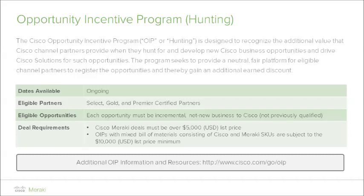Cisco OIP is also known and referred to as hunting in certain countries. The focus of the program is to reward and recognize the Cisco channel partner community when they seek out and develop new potential Cisco and Meraki business. OIP and hunting is a platform on which we build a neutral and fair playing field for those qualified partners that proactively register the opportunities they have developed or discovered. OIP and hunting is an ongoing program that is only available to partners certified at the Select, Gold, and Premier or beyond levels.